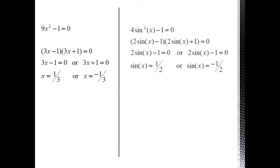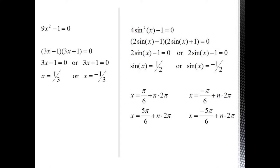Consider 4 sine squared x minus 1 equals 0 which can be factored into 2 sine x minus 1 times 2 sine x plus 1 equals 0. Then we break this into these separate linear equations which give us sine x equals 1 half and sine x equals minus 1 half. We just need to take this one step further and solve these as we did our last few examples.